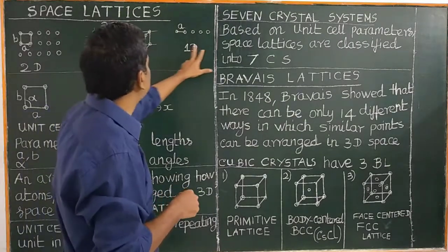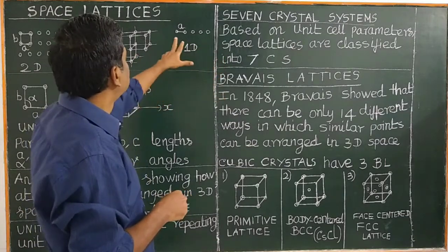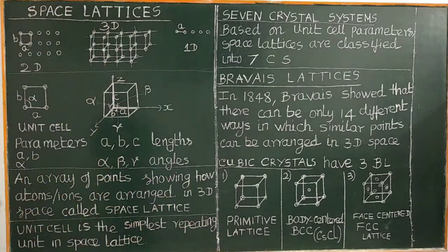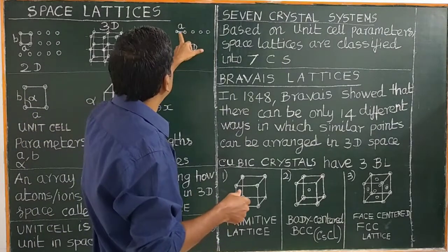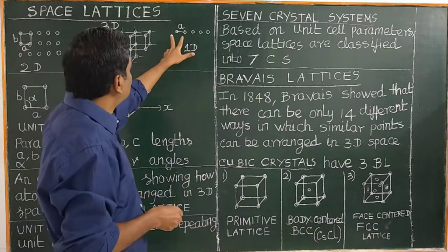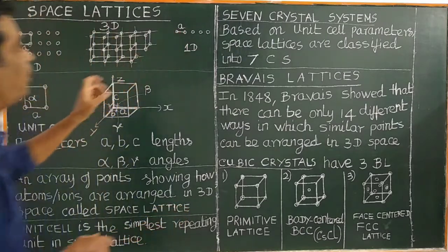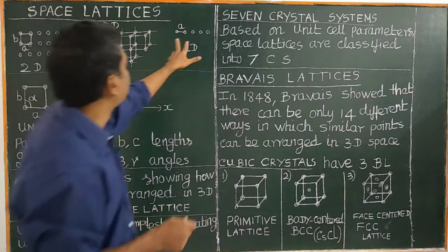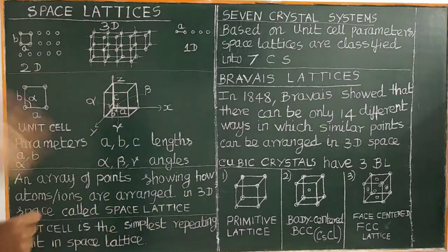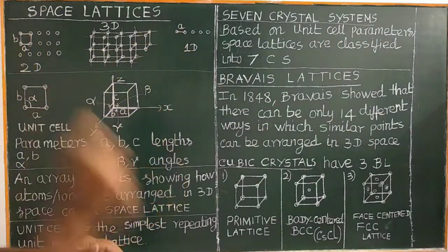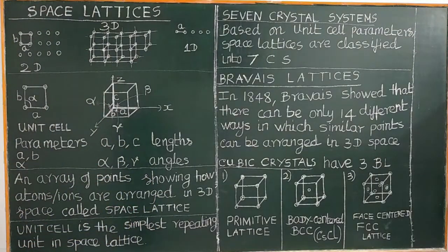Let us consider a one-dimensional space lattice. This is an array of points showing how atoms are arranged in one dimension. The only parameter to describe it is A — the distance between any two atoms. A is the only unit cell parameter to describe the one-dimensional space lattice.